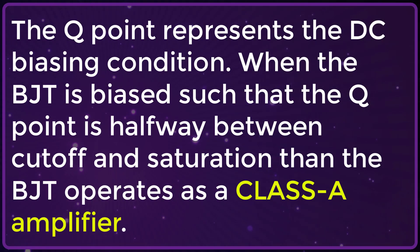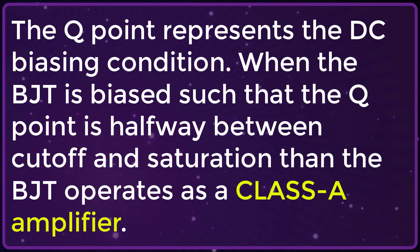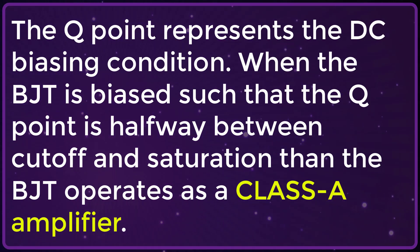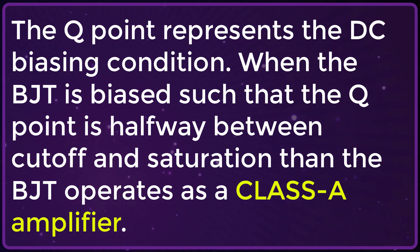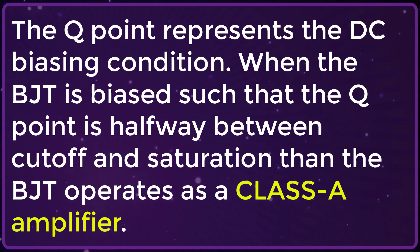The Q point represents the DC biasing condition. When the BJT is biased such that the Q point is halfway between cutoff and saturation, then the BJT operates as a class A amplifier.